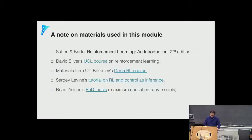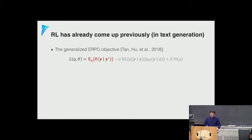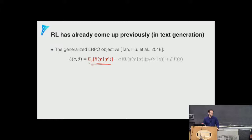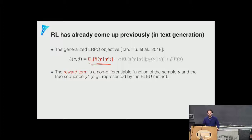We've already seen reinforcement learning in a previous lecture when the problem of text generation was introduced. It was shown that we can generalize the standard objective for encoder-decoder models by adding a term — an expectation of some reward function with respect to the encoder-decoder, where we have some generated sequence Y and a golden sequence Y*. The problem is that this term is non-differentiable.